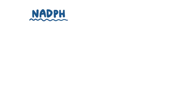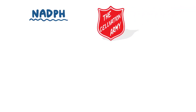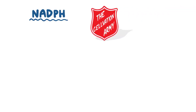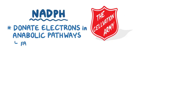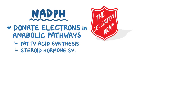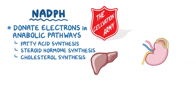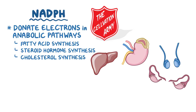Now since NADPH is electron-rich, it's time for it to give back to the cellular community. NADPH can donate electrons in anabolic pathways like fatty acid synthesis, as well as steroid hormone synthesis and cholesterol synthesis. So there's usually a lot of NADPH in tissues that make these molecules, like the liver, the adrenal cortex, the gonads, and the milk-producing breast glands.